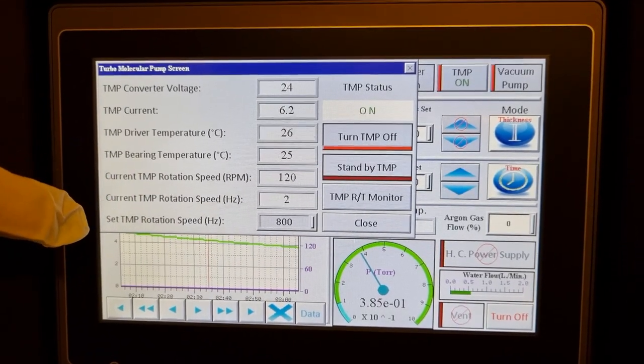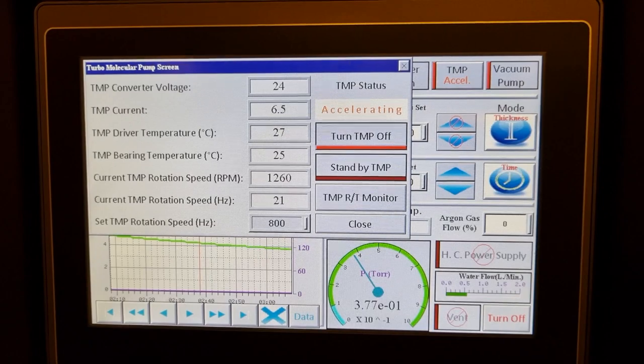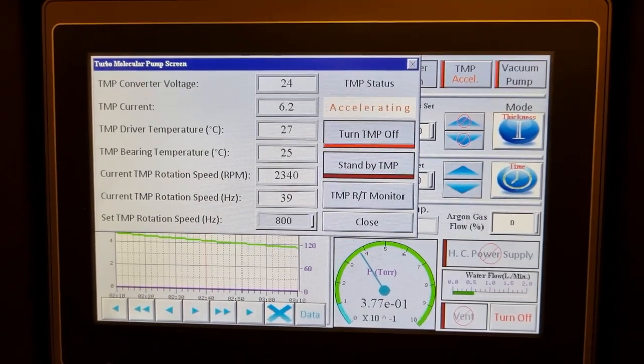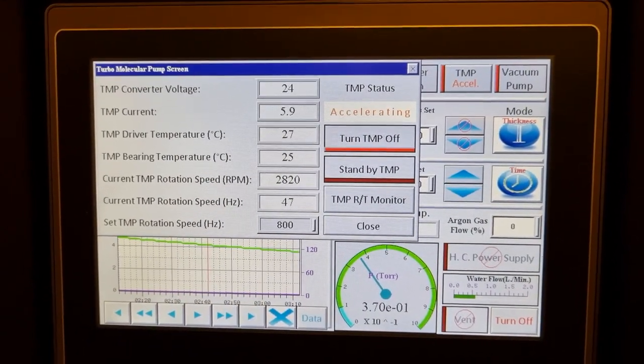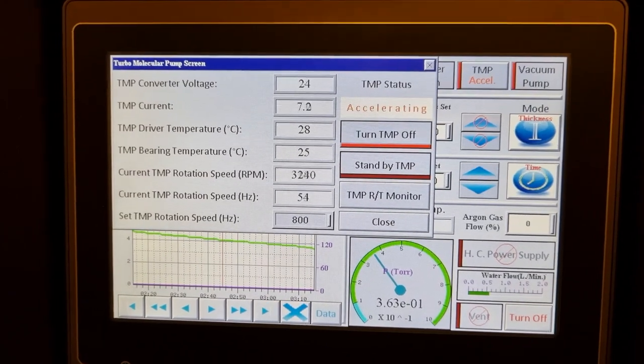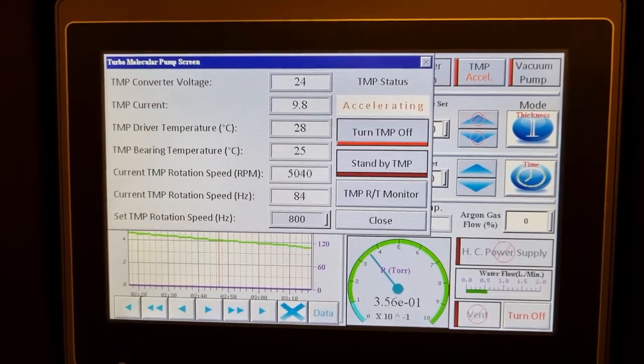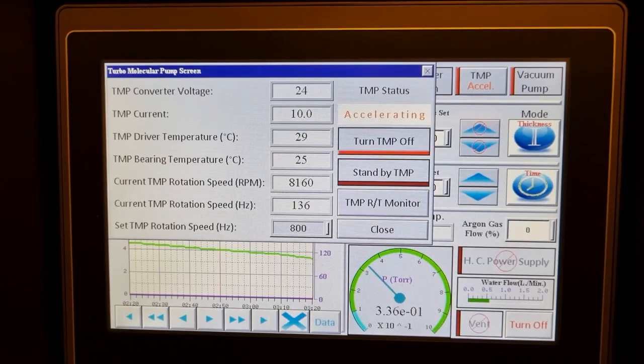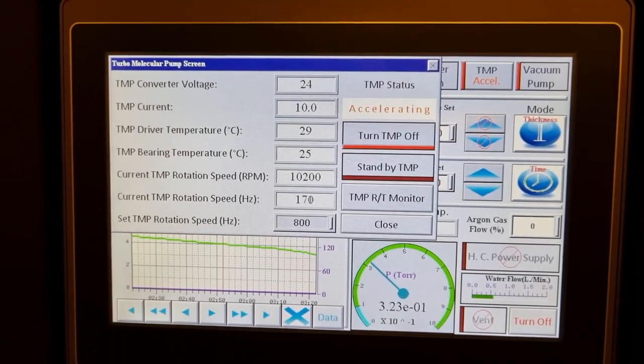So we can turn the TMP on. We'll do that by pressing the TMP on button on the main screen and then turn TMP on in this sub-screen. You can see the speed increasing. Once it starts to increase, the pressure will drop very rapidly as the turbo molecular pump gets going and starts doing its job.